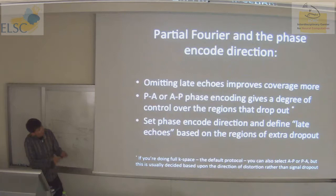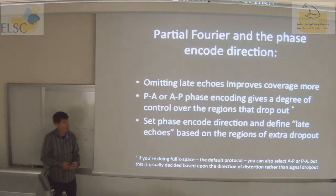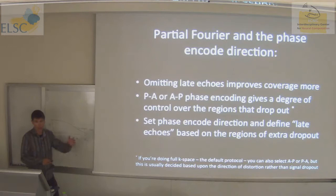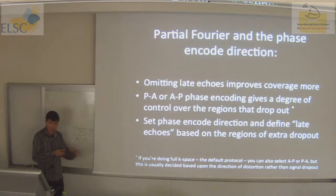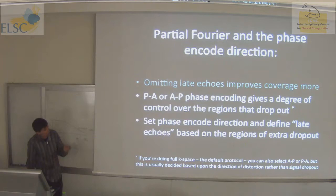Can we decide which echoes are early and which are late? Yes — because we don't have to start at the top of k-space and work to the bottom. We can reverse the phase encoding direction, which is trivial to do. For axial slices, we can go posterior to anterior or anterior to posterior. However, the image distortion will change: if an image is stretched in one direction, it will be compressed in the other. So this isn't something you can do in isolation — you have to think about effects on distortion.